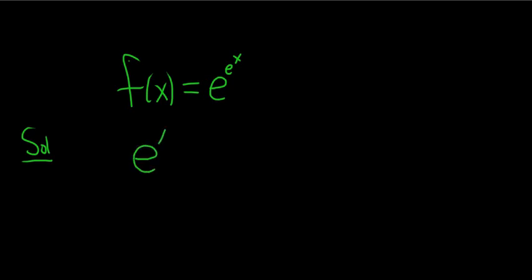So e to the x is equal to, and it can be written as an infinite sum. So it's the infinite sum as n runs from 0 to infinity of x to the n over n factorial.